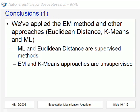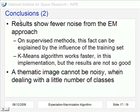We have some conclusions. We applied the EM method and other approaches, these three other approaches, also considering that Maximum Likelihood and Euclidean distance are supervised methods, and EM and K-Means approaches are unsupervised. The results show fewer noise at the EM approach. Maybe this is the reason: on the supervised methods the training set was not the best. And the K-Means algorithm, that is also unsupervised, the results are not as good as the EM approach.